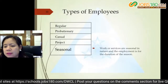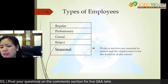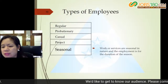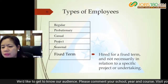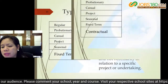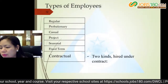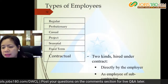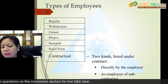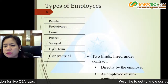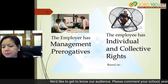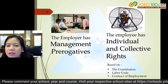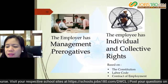Seasonal employees work on services that are seasonal in nature for the duration of the season. Fixed-term employees are hired for a fixed term not necessarily related to a specific project. Contractual employees have two kinds: directly hired and those hired through a subcontractor or agency-based. The employer has management prerogatives while the employee has individual and collective rights based on the Constitution, the Labor Code, or the contract of employment.